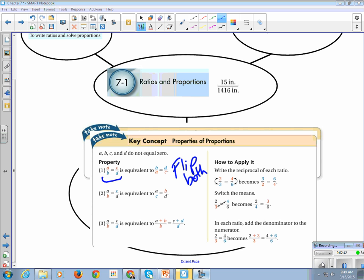The second property is if I have A over B equals C over D, I can rewrite that. I can switch the B and the C. I'm going to call this switch. So I can write A over B equals C over D as A over C equals B over D.